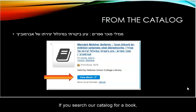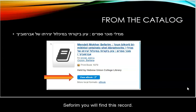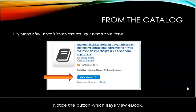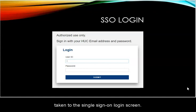If you search our catalog for a book — for example, this book on Mendele-Mohir-Saforim — you will find the record. Notice the button which says View E-Book. When you click on that View E-Book button, you will be taken to the Single Sign-On login screen.